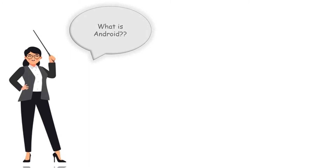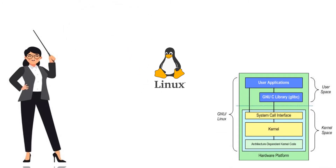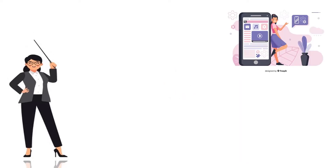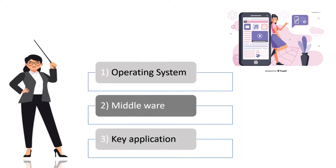Android completely works on Linux kernel architecture. Android consists of some set of software like: 1. An operating system, 2. Middleware, 3. Key applications. Let us discuss in depth.